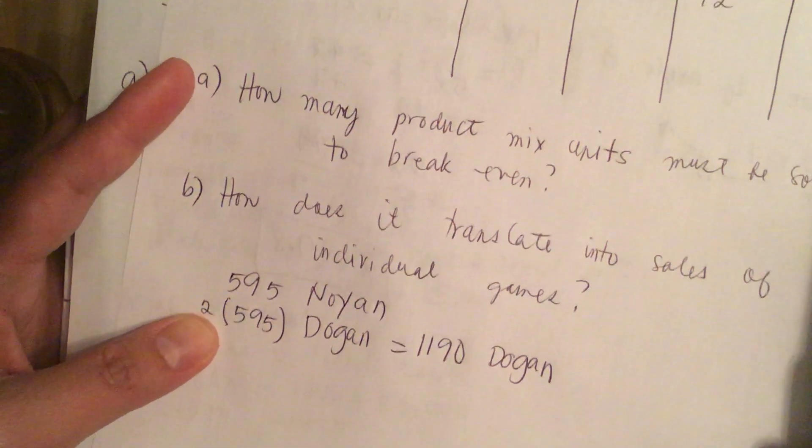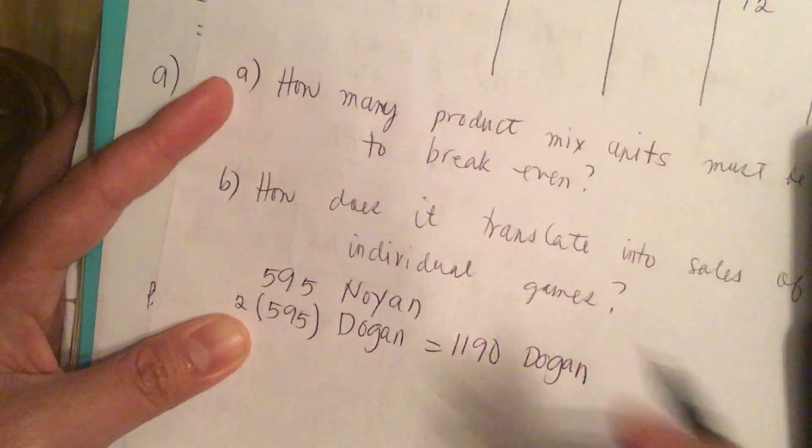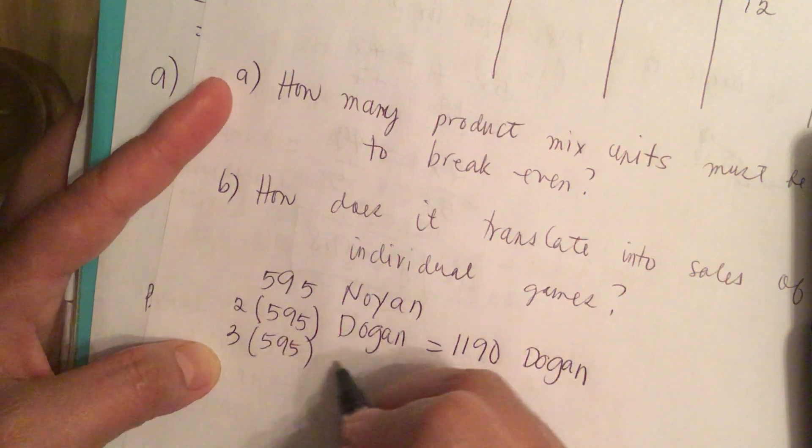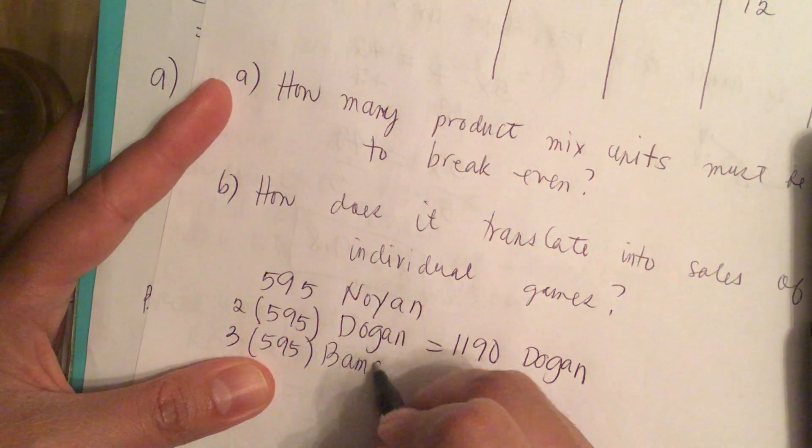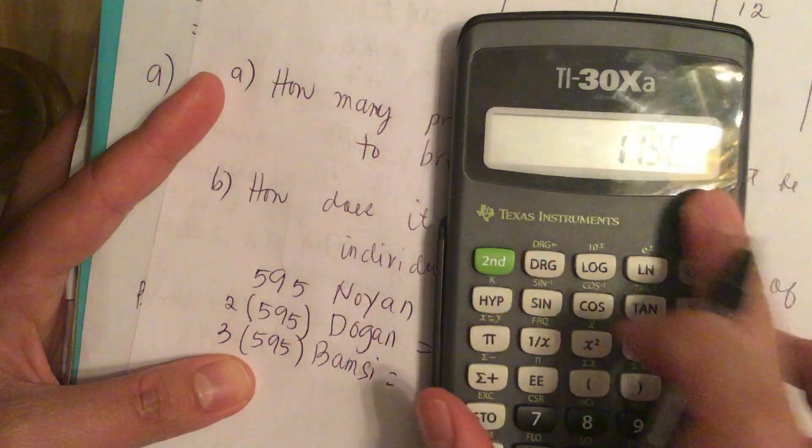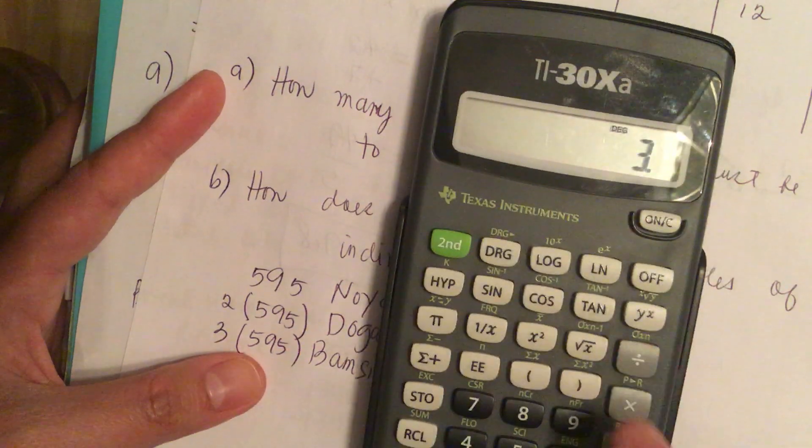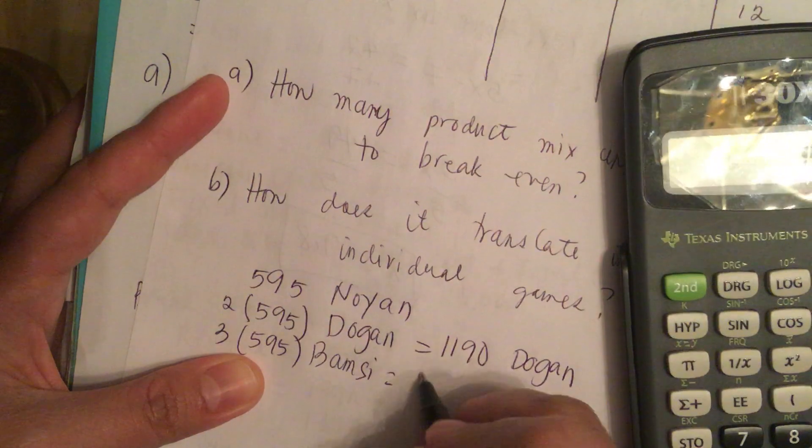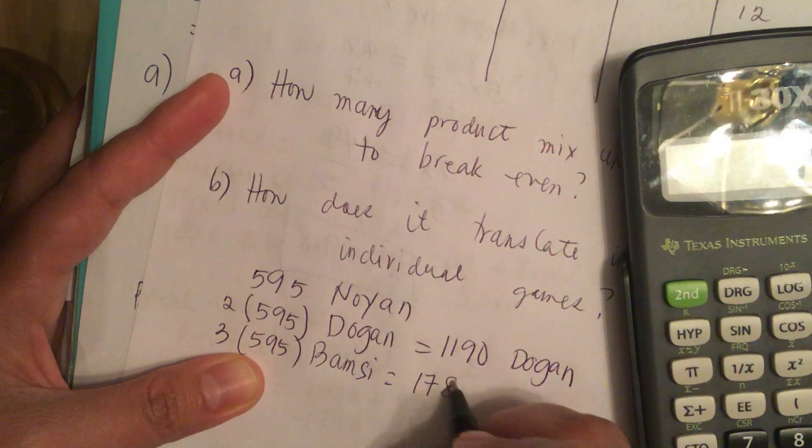Now for Bamsi, it's 3 times this. So 3 times 595 is equal to 1,785.